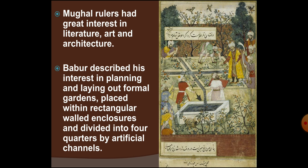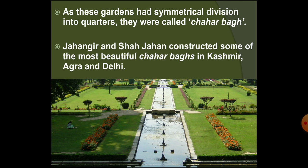These formal gardens were placed within rectangular areas surrounded by walls and divided into four equal parts by artificial channels. Because these gardens had a symmetrical division into four equal parts, they were called Charbagh, which means four gardens. The construction of Charbagh was started during Akbar's reign.